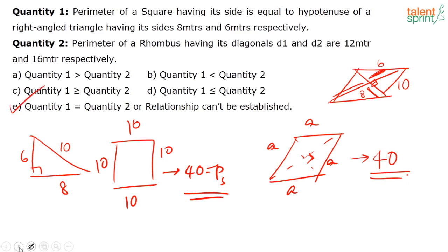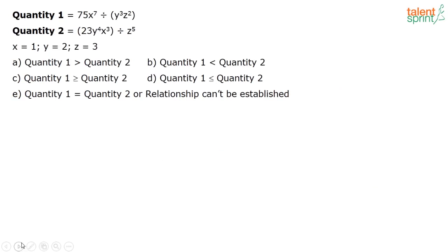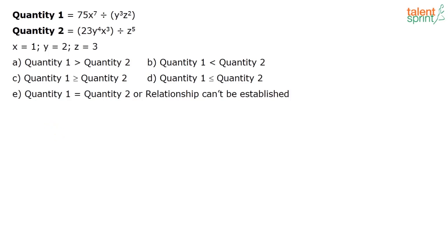Next quantity comparison question: Quantity 1 is 75·x⁷ / (y³·z²) and Quantity 2 is 23·y⁴·x³ / z³, with x = 1, y = 2, z = 3. Substituting into Quantity 1: 75 × 1 / (8 × 9) = 75/72, approximately 1.04. For Quantity 2: 23 × 16 × 1 / 27 = 368/27, approximately 13.6.